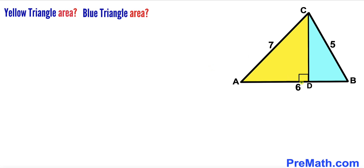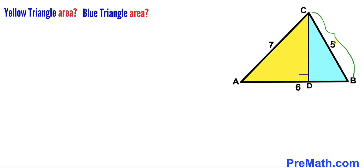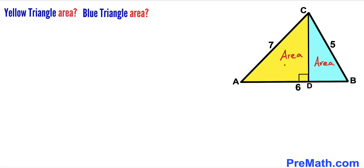Welcome to Premath. In this video we have triangle ABC along with perpendicular CD that divides this triangle into two right triangles — the yellow right triangle and the blue right triangle. The side length AB is six units, BC is five units, and AC is seven units. Our task is to calculate the area of the yellow triangle and the area of the blue triangle.